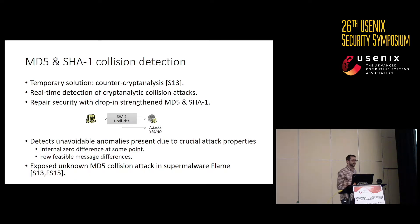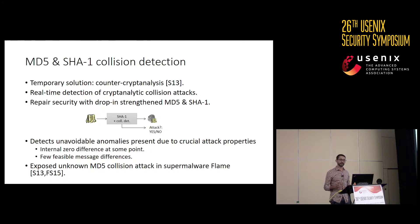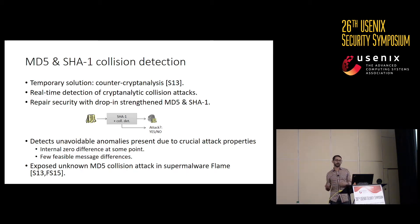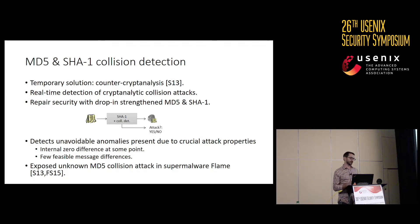A solution for this is collision detection. It's a temporary solution that falls under the overarching headline of counter-cryptanalysis — that is, real-time detection of cryptanalytic attacks. The idea is that you repair security with a drop-in hash function replacement that not only computes the digest, but gives you an answer: was there an attack detected, yes or no? This works by detecting unavoidable anomalies that are part of crucial attack properties — an internal zero difference at some point in the hash computation, and only a very few feasible message differences between colliding messages.